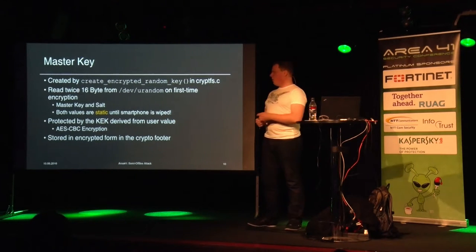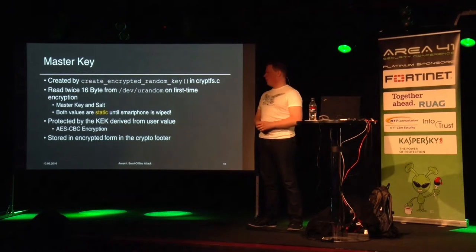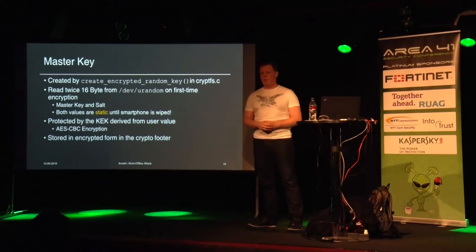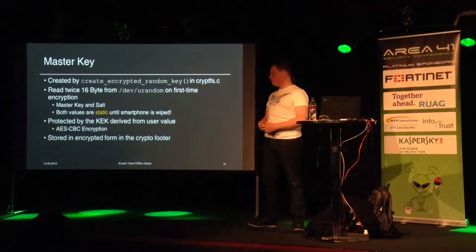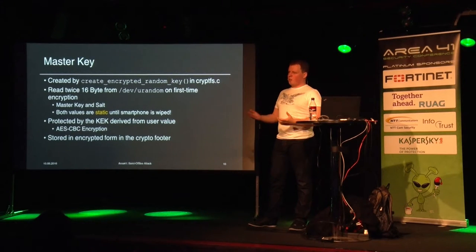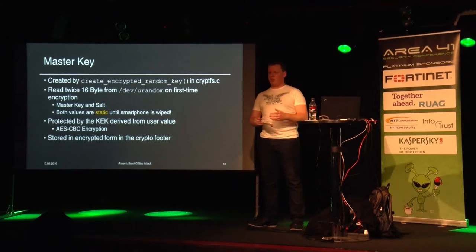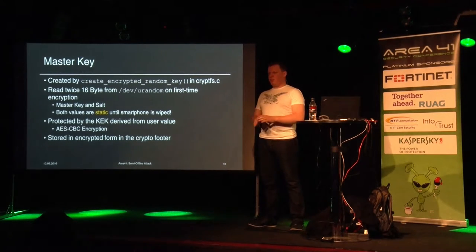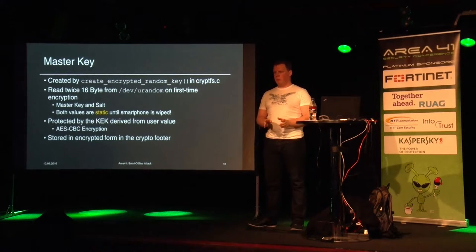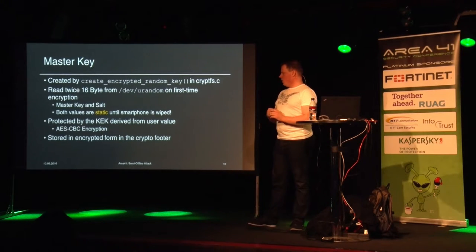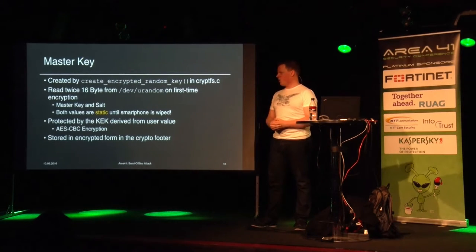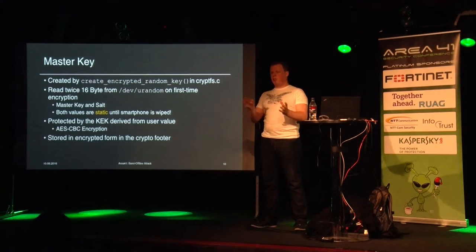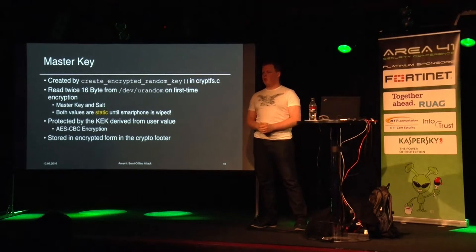The master key in Android is generated with the function encryptFSC - that source code file is where everything happens for Android full disk encryption. The function reads from /dev/urandom twice - 16 bytes each, which is 128 bits. Those values are static; if you don't wipe your phone, they stay with your phone. The master key is protected by the KEK via another AES-CBC encryption. The encrypted master key, along with the salt and other values, is stored in the crypto footer.